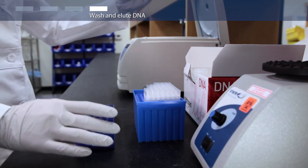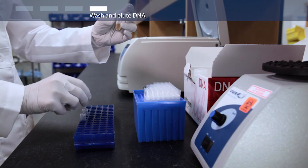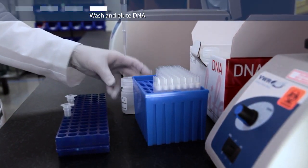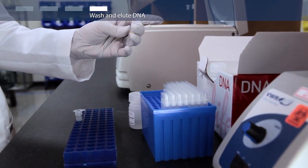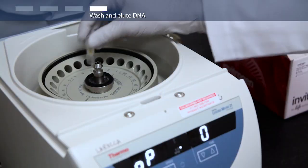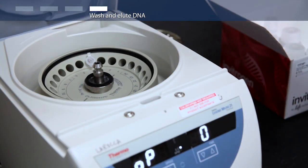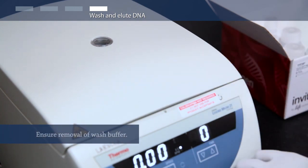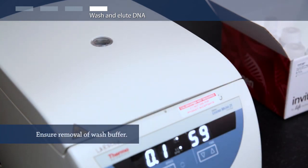To wash the DNA, place the spin column in a clean collection tube and add 500 microliters of wash buffer. Then centrifuge for 1 minute. Discard the flow through and centrifuge again for 30 seconds at 14,000 G. This will ensure removal of the wash buffer, which could interfere with downstream applications.